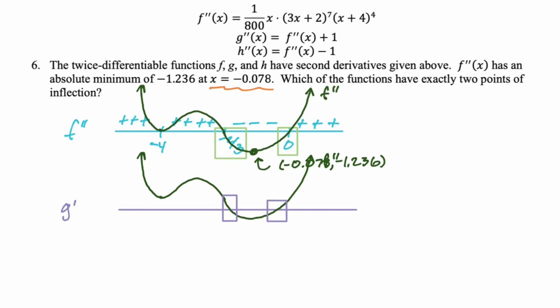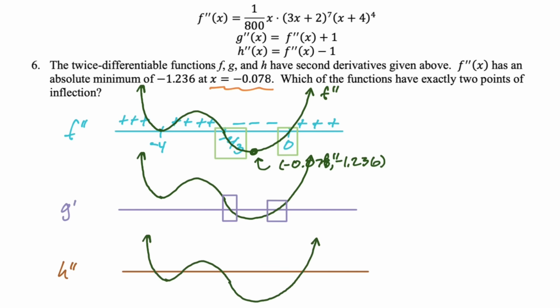However, h'' is a problem. The relative maximum between x = -4 and x = -2/3 is much greater than 1. When we shift f'' down for h'', the bounce region moves below the axis — now the sign chart shows 4 axis crossings, giving 4 points of inflection, not exactly 2. So the answer is f and g, not h. It's an interesting problem.